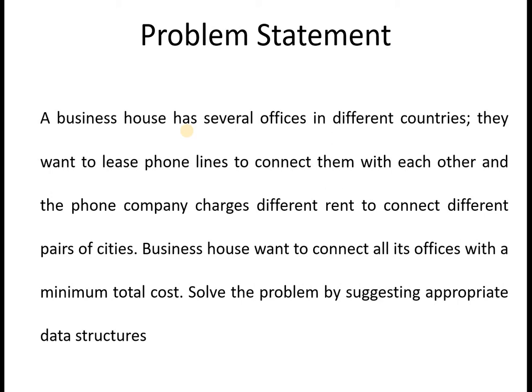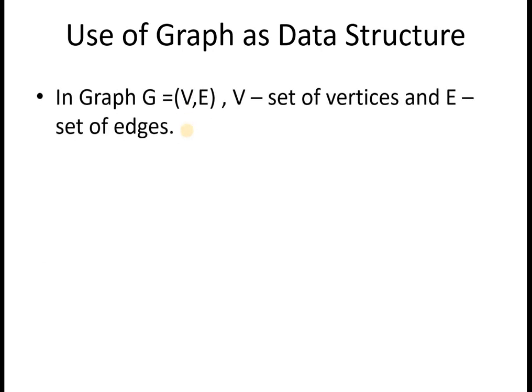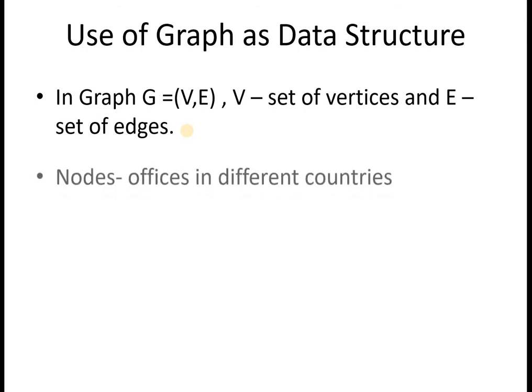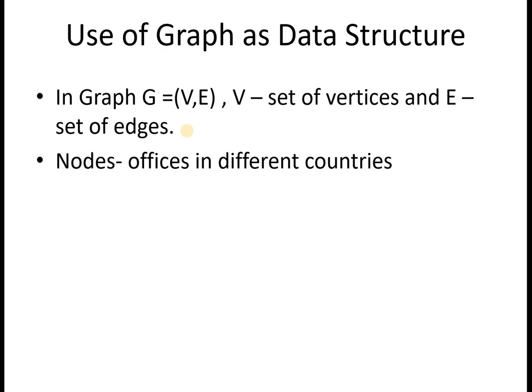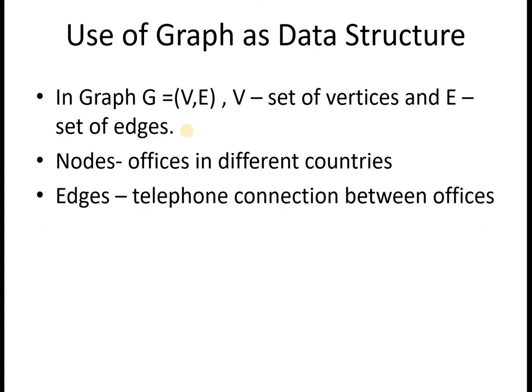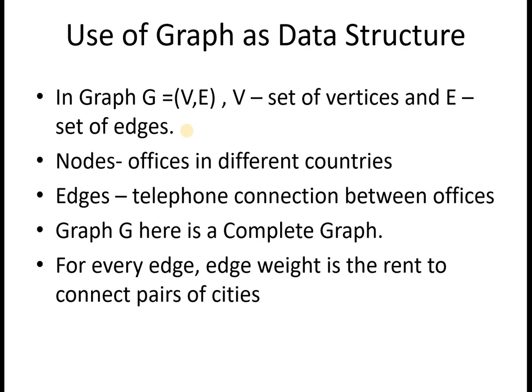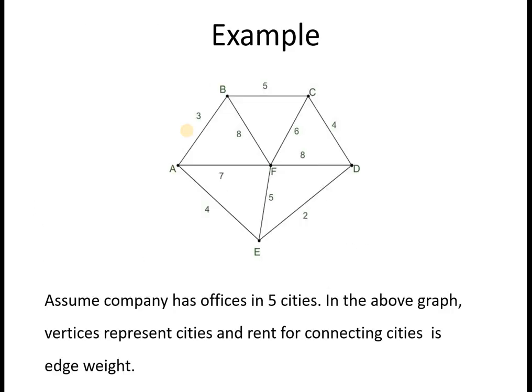So how can you solve this problem? The solution is to use a graph as a data structure, where V is a set of vertices and E is a set of edges. Here, the set of vertices represents the offices in different countries, and the edges represent the telephone connections between the offices. The graph G is a complete graph. For every edge, the edge weight is the rent to connect the pairs of cities. So this is a weighted graph.